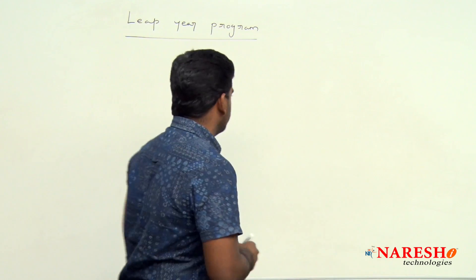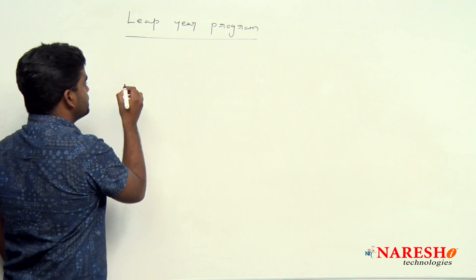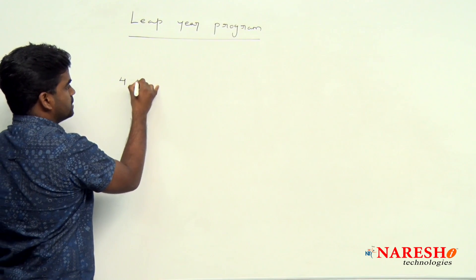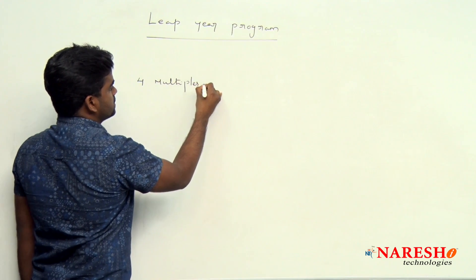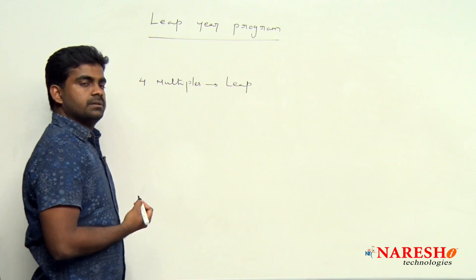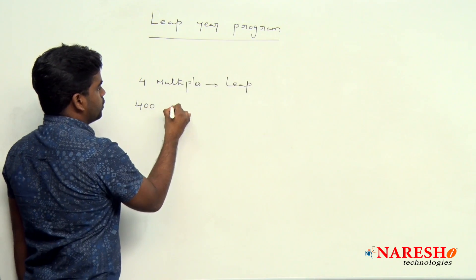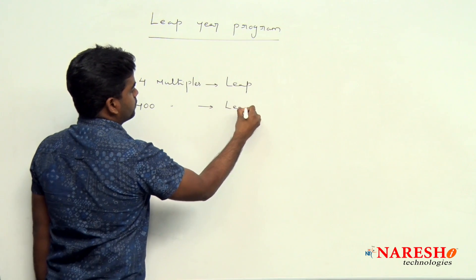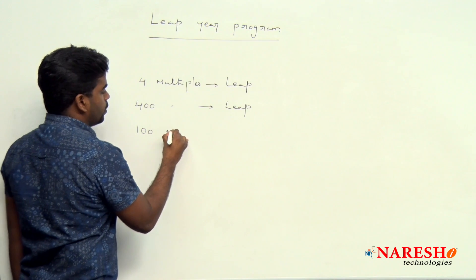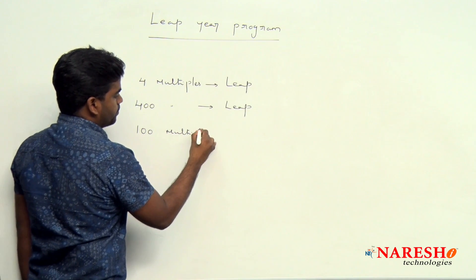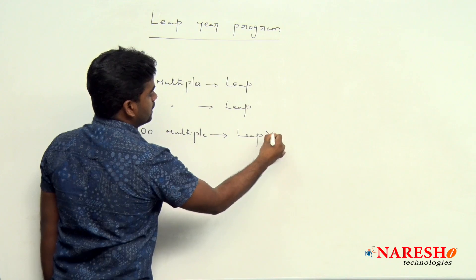A number which is divisible by 4 — all the multiples of 4 are leap years. Also, multiples of 400 are leap years. But remember, multiples of 100 are not leap years.